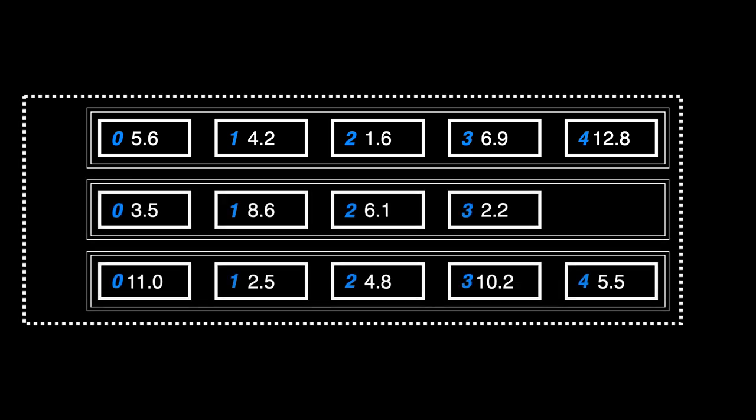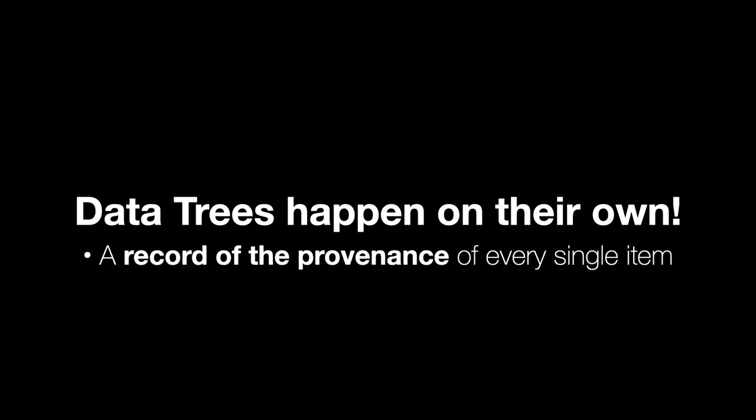In a data tree, each list called a branch of the tree has its own more complex address called a branch path. One important thing to know is that data trees happen on their own. Grasshopper will automatically construct data trees for you. In fact, all data, even single items and lists are just special cases of data trees. As I said at the beginning, they're a record of the provenance of every single item. To understand why this happens, you have to look closely at components. I'm going to introduce a made-up vocabulary for the kinds of components you encounter in grasshopper so we can understand how they work with data trees.